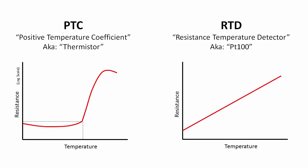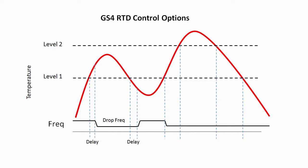RTDs on the other hand have a very linear response to temperature change so you can just buy one device and then just pick whatever temperature you want the GS4 to react to. RTDs give you a lot of control over fault reporting and drive behavior.